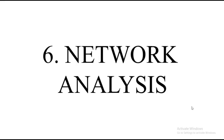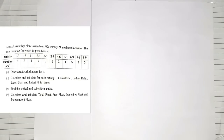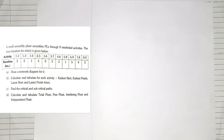The next topic is based on Network Analysis — specifically the sum based on Critical Path, which is the simplest topic of all. A small assembly plant assembles PCs through nine interlinked activities with given time durations. They ask us to: (1) draw a network diagram, (2) calculate and tabulate earliest start, earliest finish, latest start, latest finish time for each activity, (3) find the critical and subcritical path, and (4) calculate total float, free float, interfering float, and independent float.